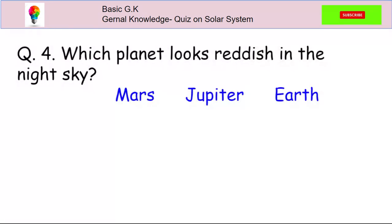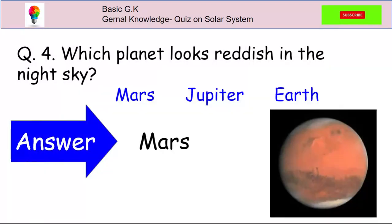Question 4. Which planet looks reddish in the night sky? Mars, Jupiter, or Earth? The answer is Mars. Mars is known as the red planet.